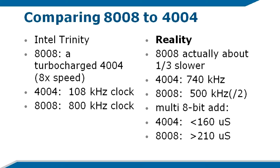The 8008, as it came out early 1972, had a 500 kHz clock, not 800. About a year or so later, as the process was improved, there was a speed-selected version called the 8008-1. But you generally don't charge a lot more for those, because most of the parts you get are the 500 kHz version.